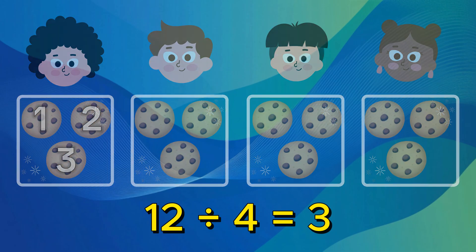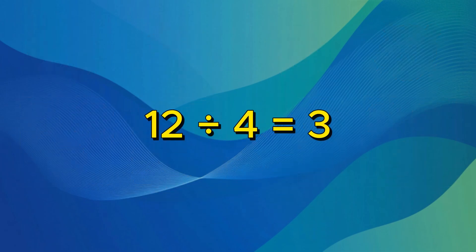Also, because division is just the opposite of multiplication, you can check your answer by multiplying. Start with your answer and work backwards. 3 times 4 equals 12. If the multiplication is right, then your division was right.